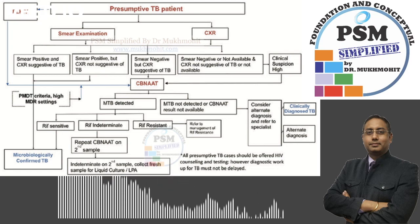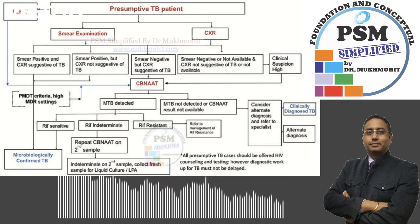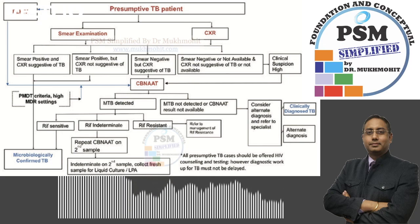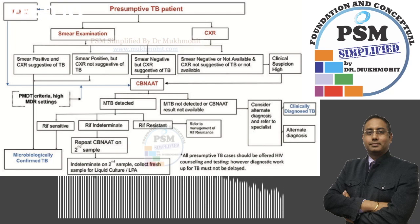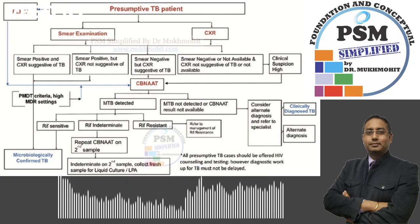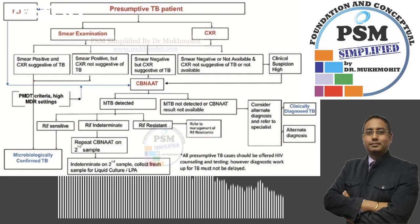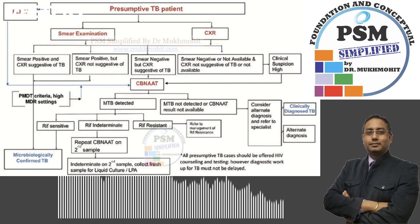However, if the patient is rifampicin sensitive and isoniazid sensitive, and there is no other drug resistance found, in those cases we follow the DSTB — that is, drug-sensitive TB — guidelines.